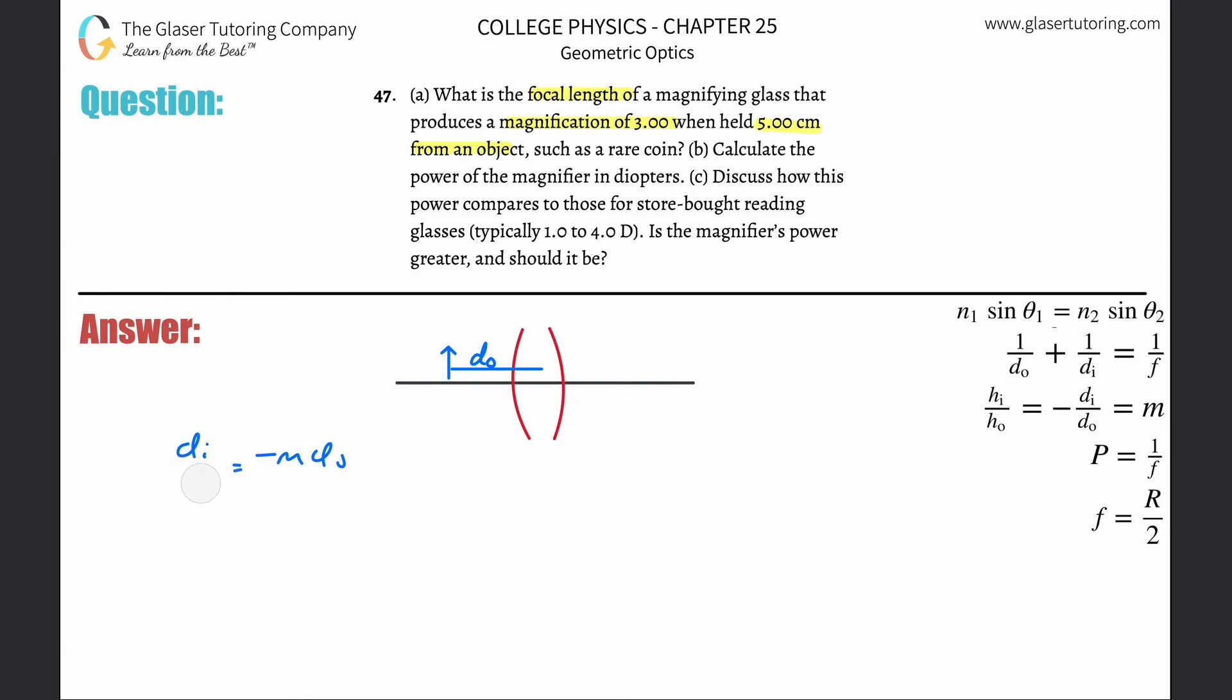Now just plug in the values: magnification of three, object distance of five centimeters. Careful, you're going to get out centimeters. This works out to negative 15 centimeters.